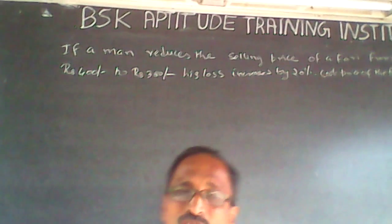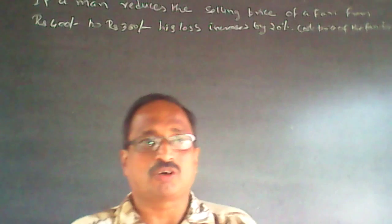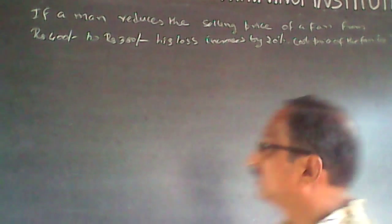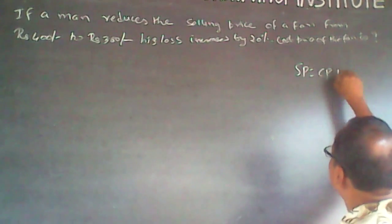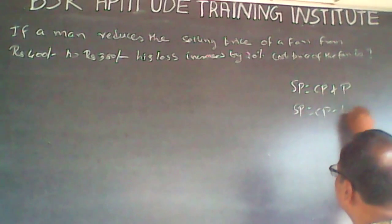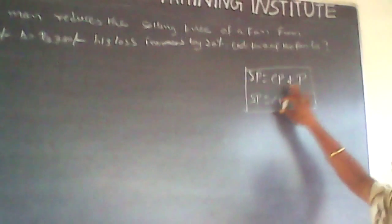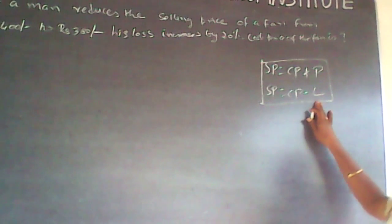This is a very simple question about cost price, selling price, profit and loss. Whenever we talk about selling price and cost price: selling price is always equal to cost price plus profit in case of profit, and selling price is equal to cost price minus loss in case of loss. This is the fundamental rule — nothing more than that.